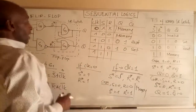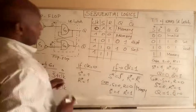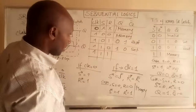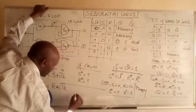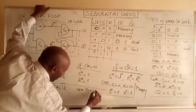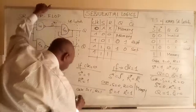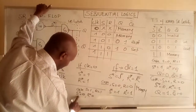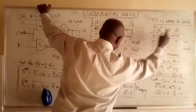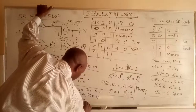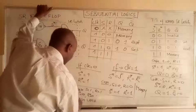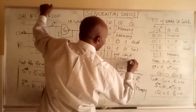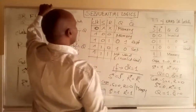We remain with the last case: S=1, R=1. S*= 1̄=0 and R*= 1̄=0. So S*=0 and R*=0. That is the invalid condition — not used. This case is invalid.